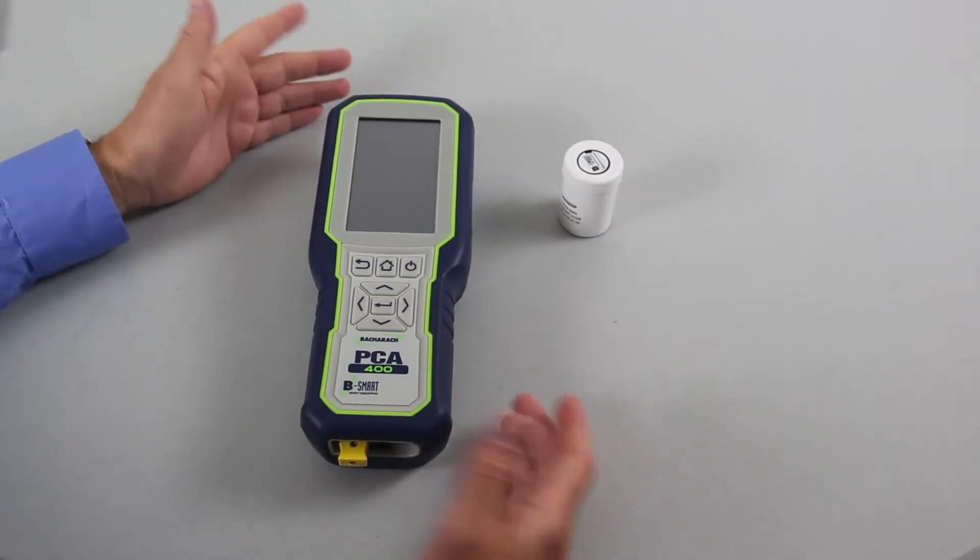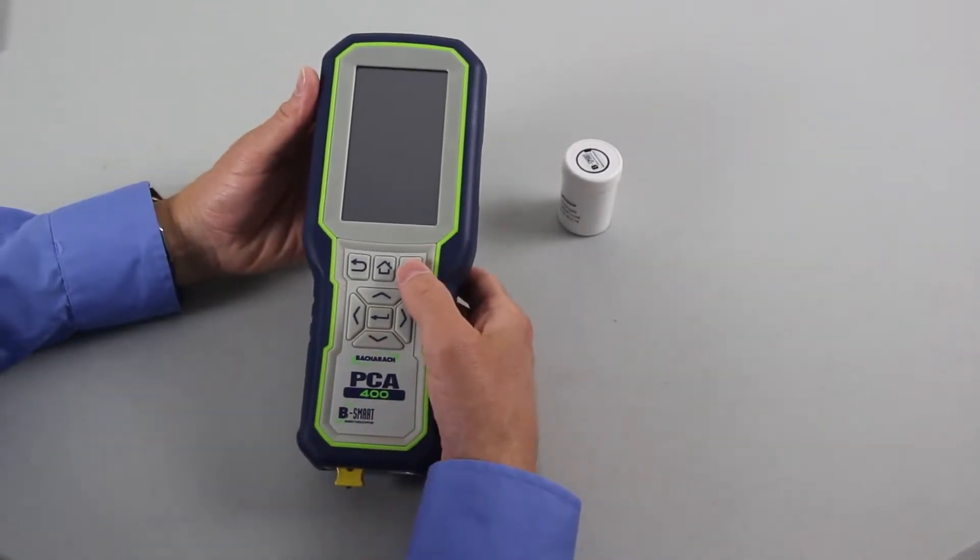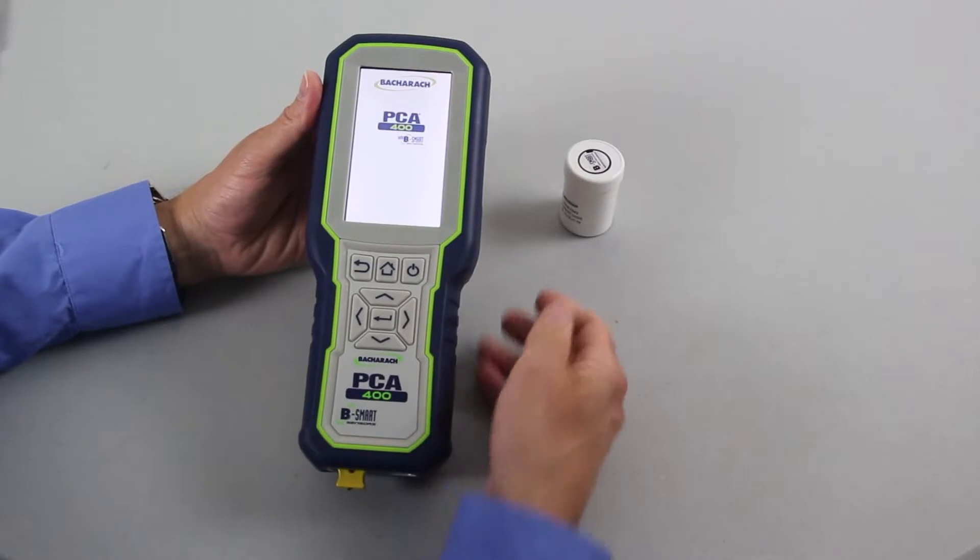Now that we have the B-Smart sensor installed, it's time to turn on the PCA400 and let it go through its 60-second warmup.